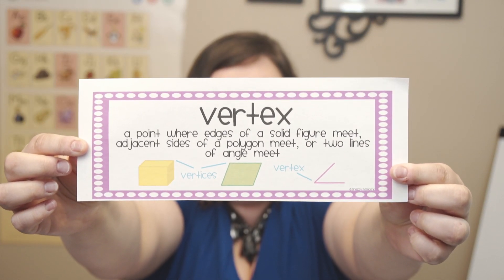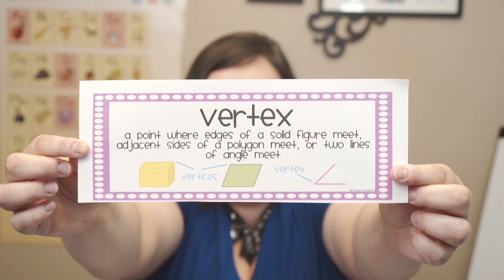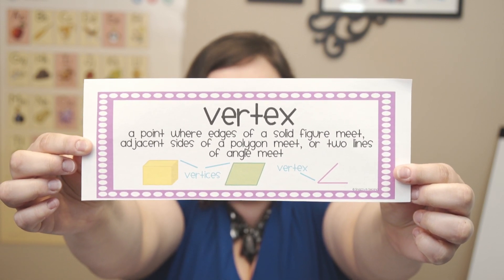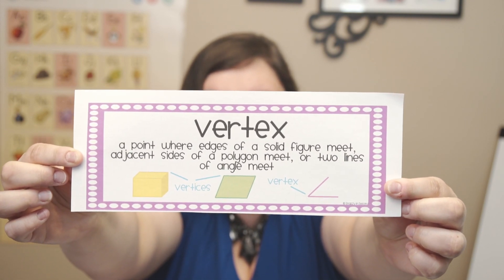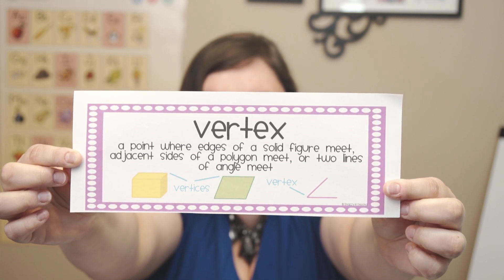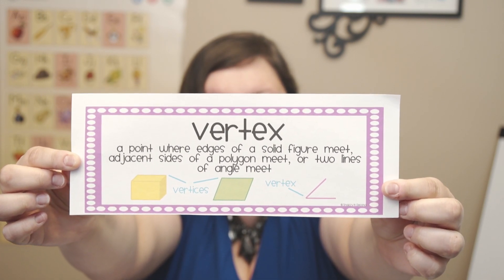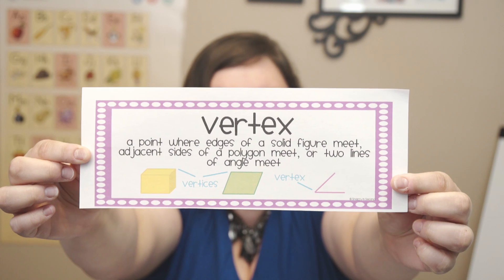Vertex — a point where edges of a solid figure meet. Adjacent sides of a polygon meet where two lines of an angle meet. See my vertex? Those are the corners. When two sides come together, it makes a vertex. Multiple vertex is called vertices. If it's more than one, we say vertices. If it's less than two, we say vertex.